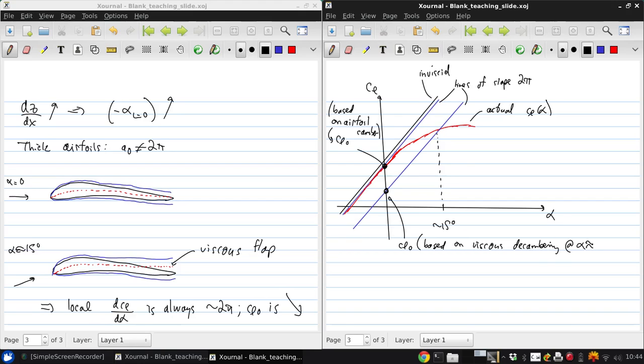So the local lift slope hasn't changed. What's changing is that C_l0 is sort of a moving target which is decreasing as we move to higher and higher angles of attack, because this camber shape is moving up and up. Maximum lift will occur when the viscous decambering effect overpowers the lift slope dC_l/dα. And so after that, further increases in angle of attack actually reduce the lift.